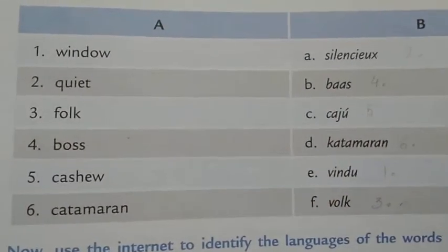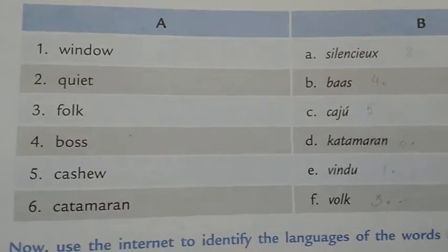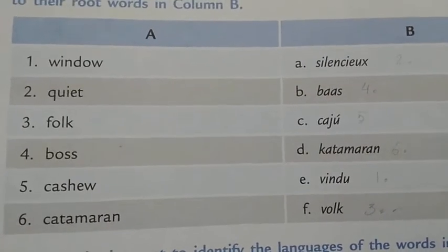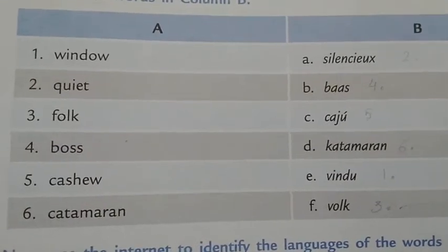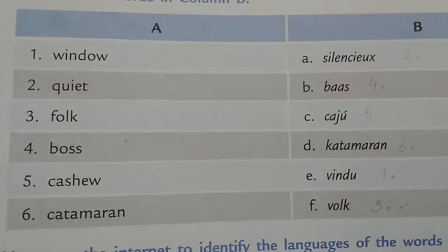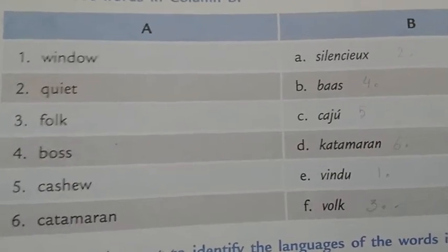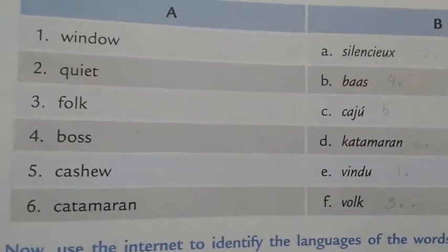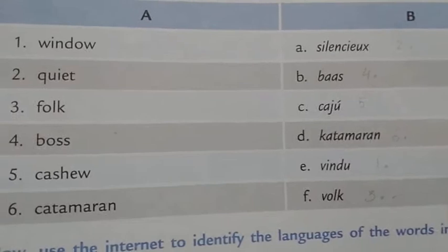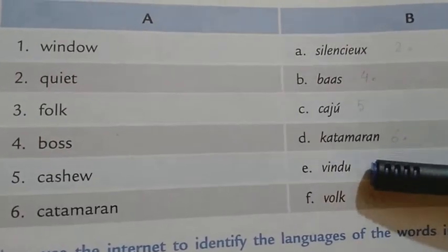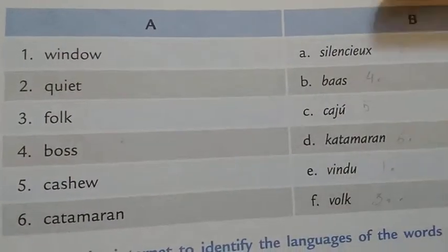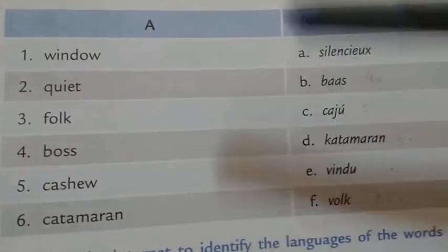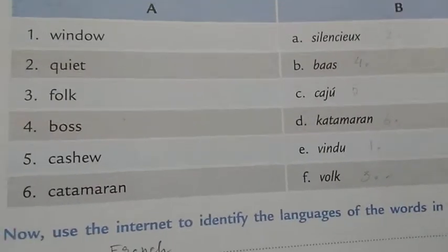First is 'window.' Window is an opening in the wall or roof of a building or vehicle, to admit light or air and allow people to see outside. The root word of window is 'vindauga' — wind eye. When you pronounce 'window' and 'vindauga,' they sound similar. So the root word of window is vindauga.